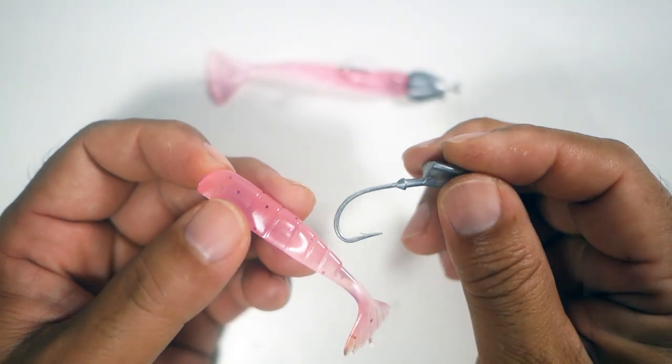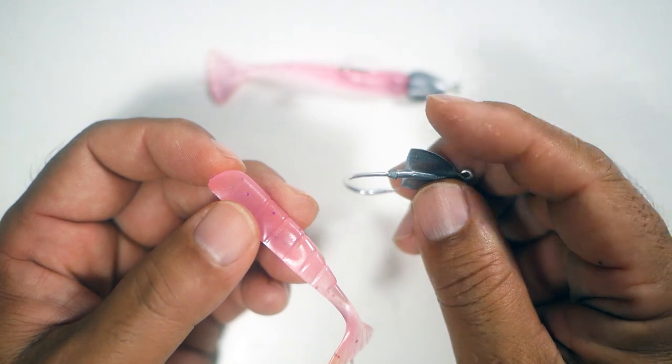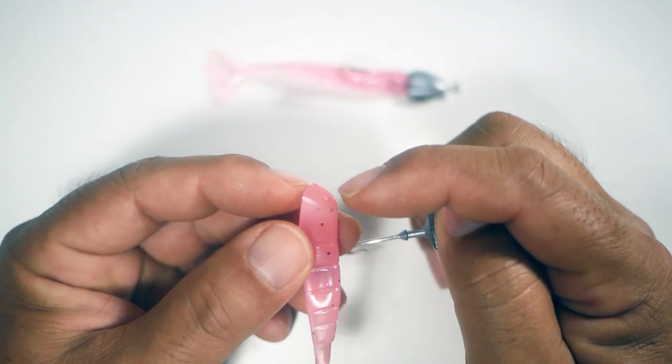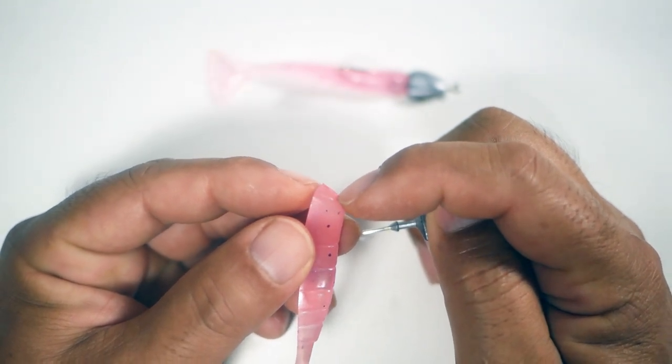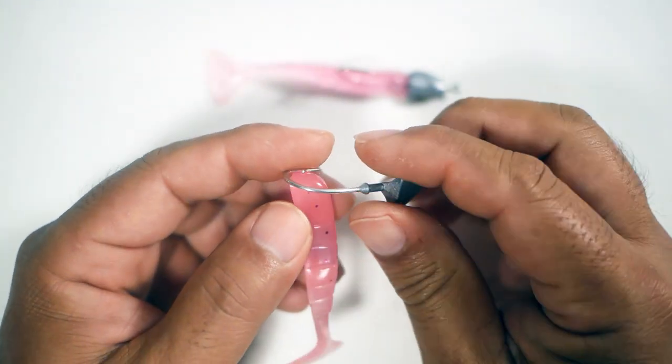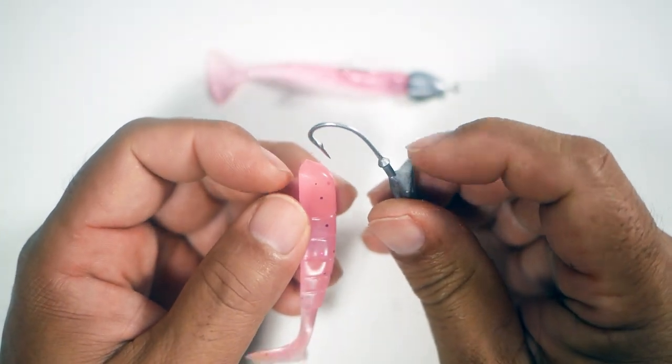Now let's do the 30-degree angled bonefish jig head. Remember on this one, to get the correct alignment, we want to start the point of the hook towards the top quarter to one third and run it along that top edge so the bottom alignment is correct.